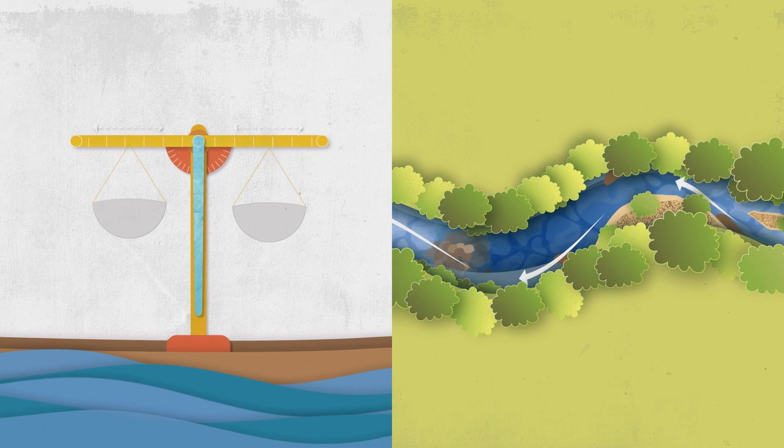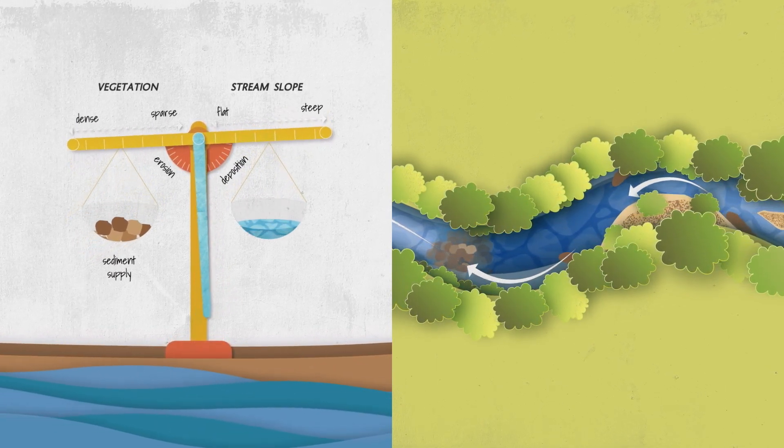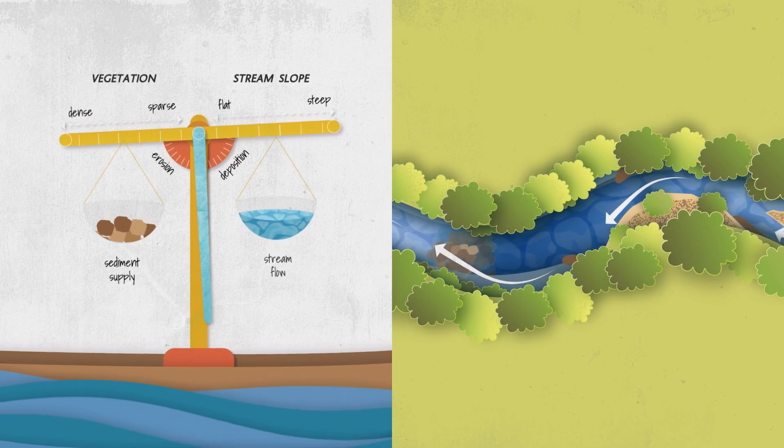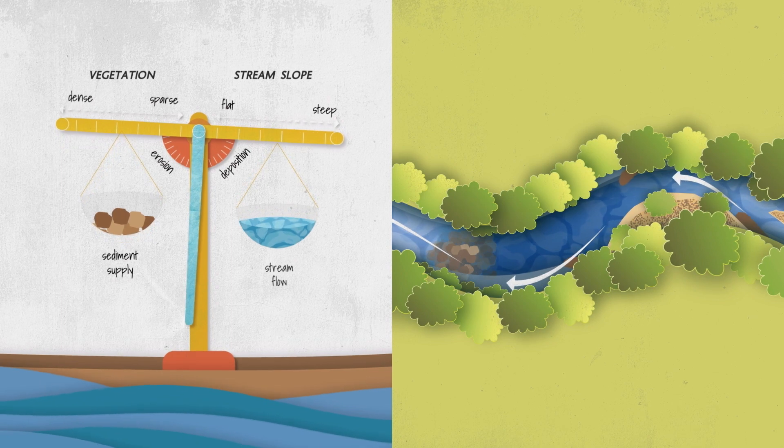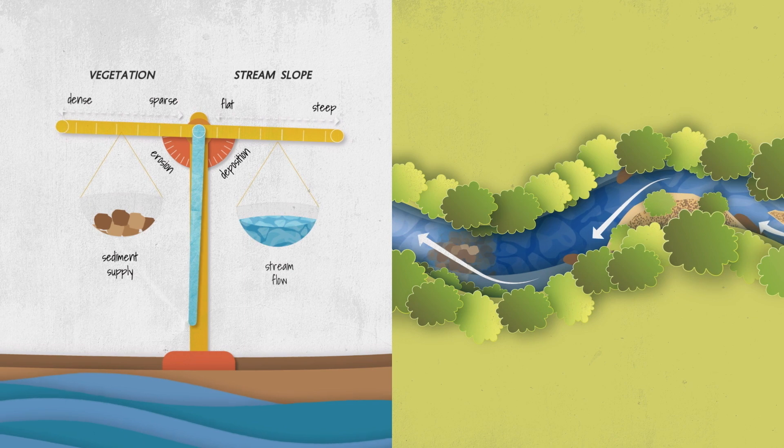Alluvial channels form a balance over time between these key variables. If one component changes then the balance tips one way or the other. When these factors remain relatively constant we typically see low rates of river adjustment.